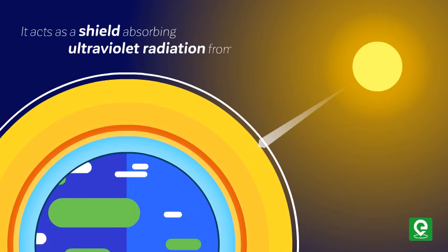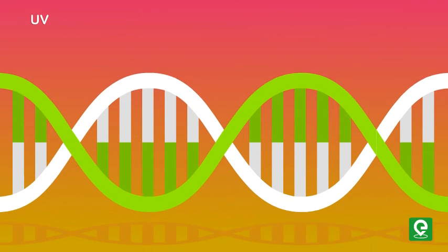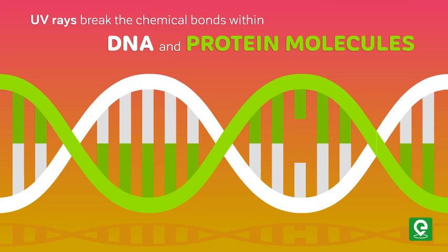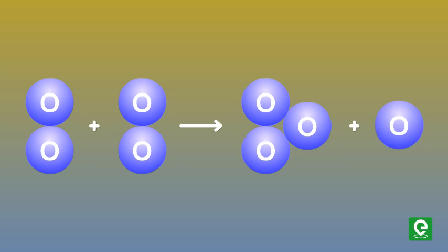UV rays are highly injurious to living organisms because the UV rays break the chemical bonds within DNA and protein molecules. Ozone is formed by the action of UV rays on molecular oxygen and also gets degraded into molecular oxygen in the stratosphere.